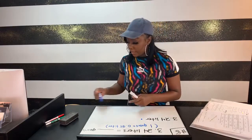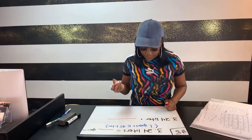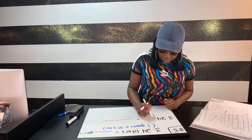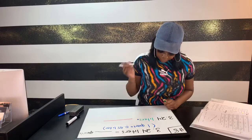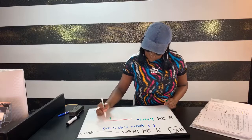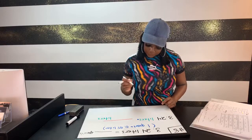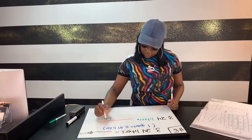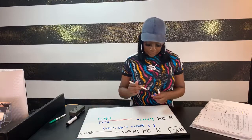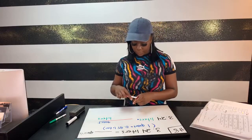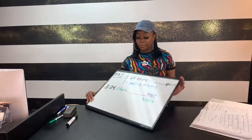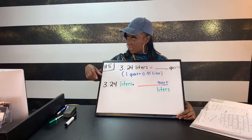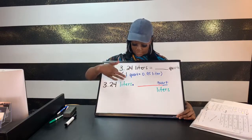We're going to write the key that they give us in the ratio. First things first: whenever you're trying to solve, you always want to write the unit you start with first — whatever is being converted. So 3.24 liters goes on the left side, and we're going to multiply that times the ratio they give us.